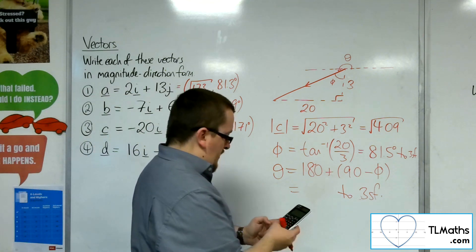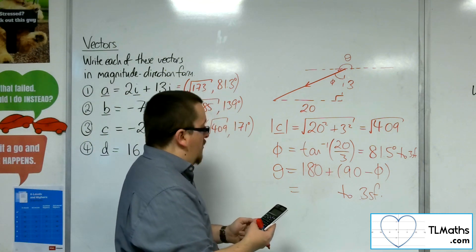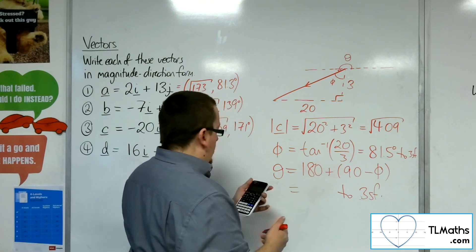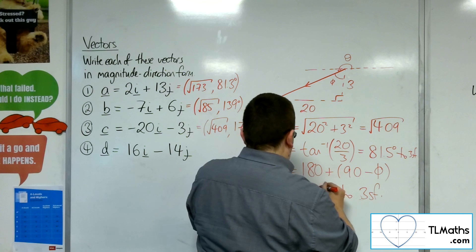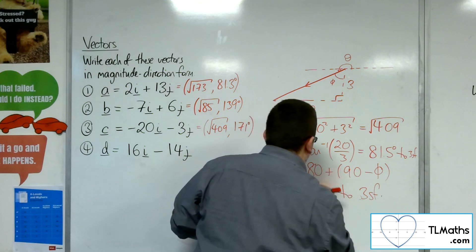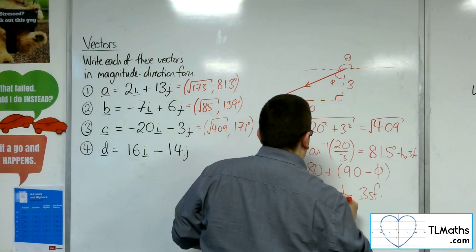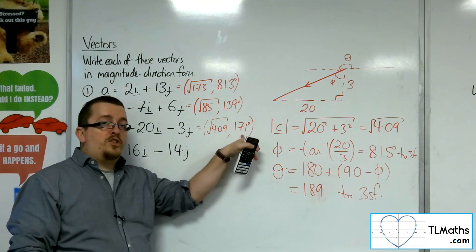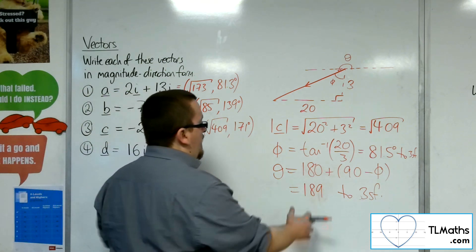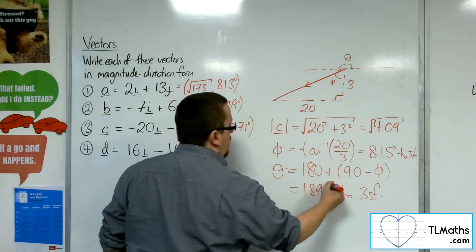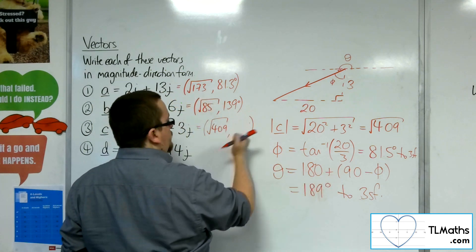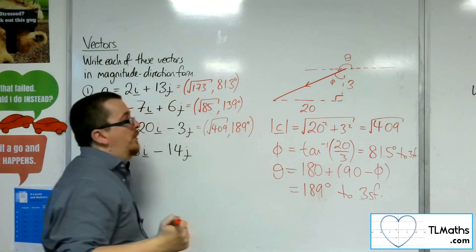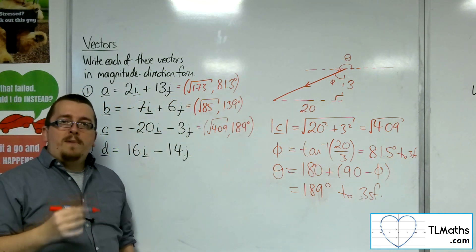That will leave me with the theta that I want. So, inverse tan 20 over 3, quickly do that on my calculator again. 180 plus 90 take away phi is 189 to 3 sig fig. Now, obviously, if we'd already calculated the 171, we could just do 360 take away that, and we get to the 189. So, it really depends on which way you're measuring that angle.